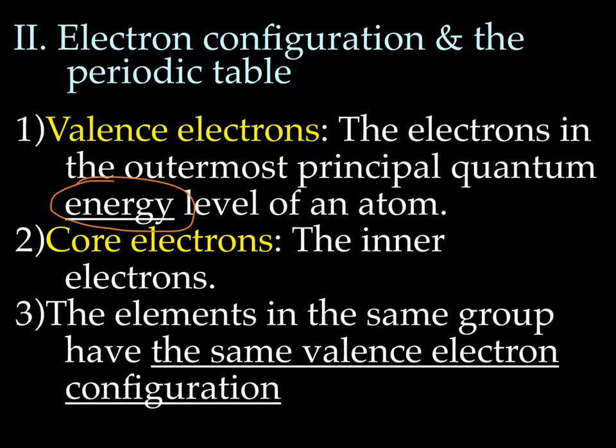The core electrons are the inner electrons. So if I were to draw the electron configuration of, let's say, we'll pick carbon. We have 1s2, 2s2, 2p6.